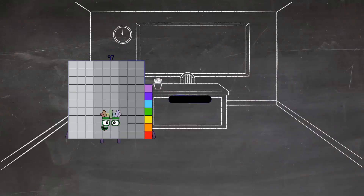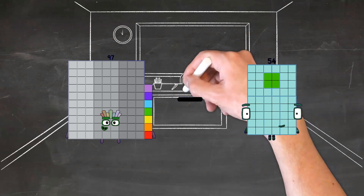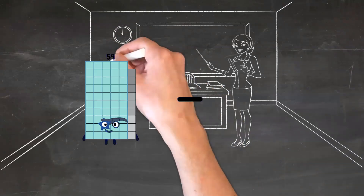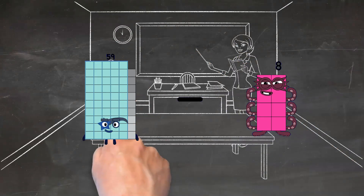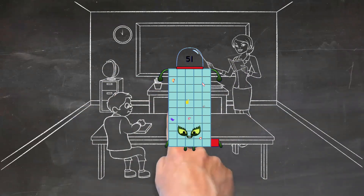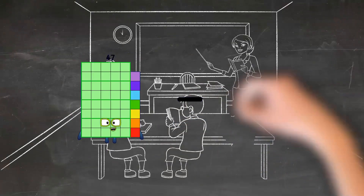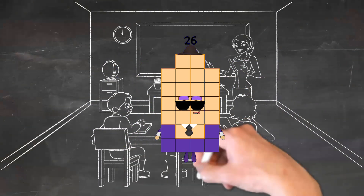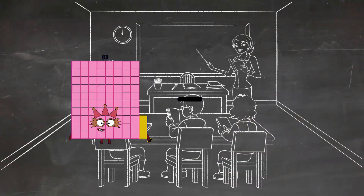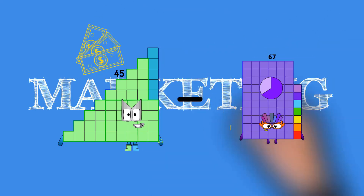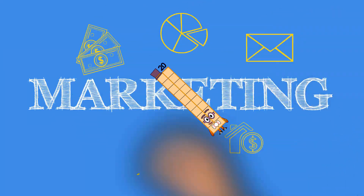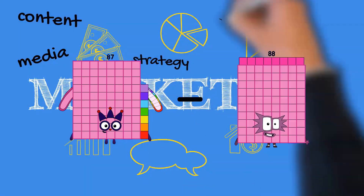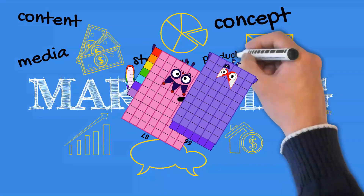97 minus 54 equals 43. 59 minus 8 equals 54. 45 minus 25 equals 20. 87 minus 66 equals 21.